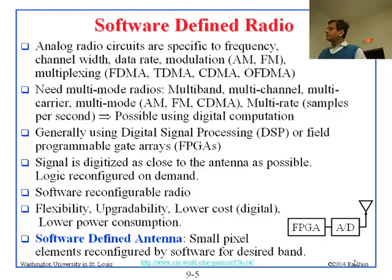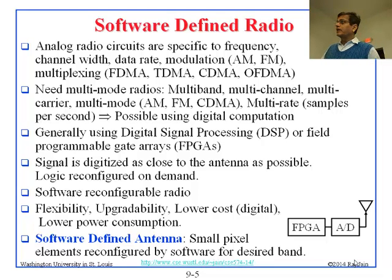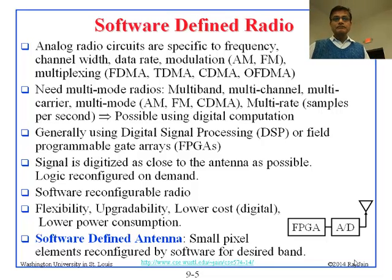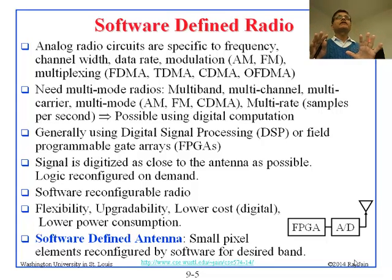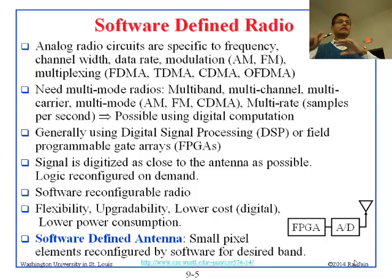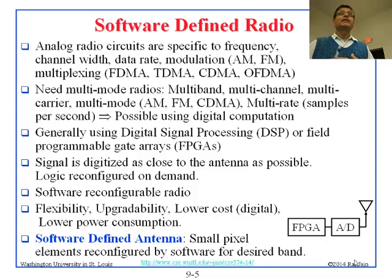The only part still left as analog is the A-to-D converter and whatever is in front of it, plus the antenna. But now people are even talking about software-defined antennas, where they will print very small pixels on a chip that can be connected for any desired frequency band. So everything is becoming digital. This is called software-defined radio. You should not confuse software-defined radio with software-defined networks — SDN — which is a totally different concept. SDN is for general networks, nothing to do with wireless, and it is much newer than SDR.